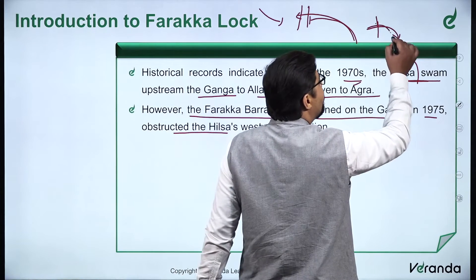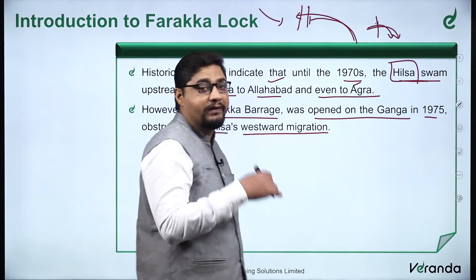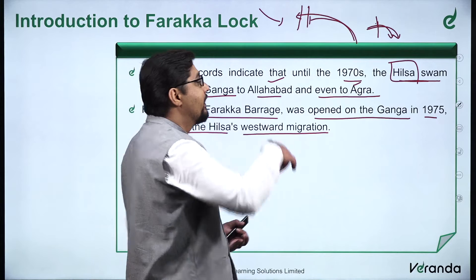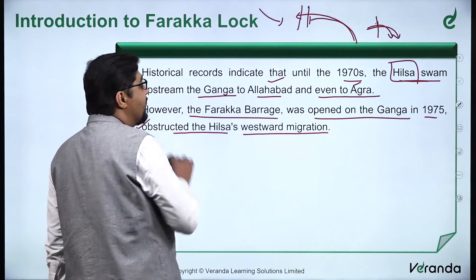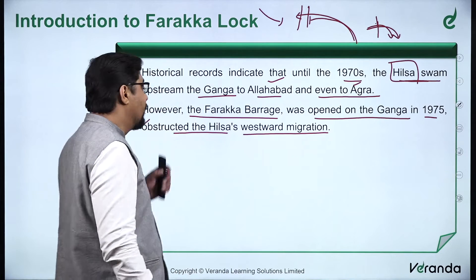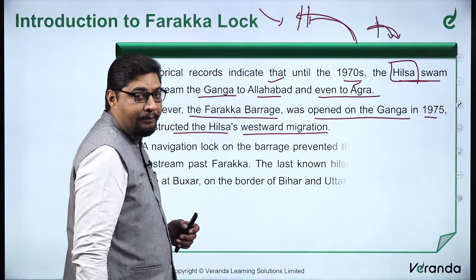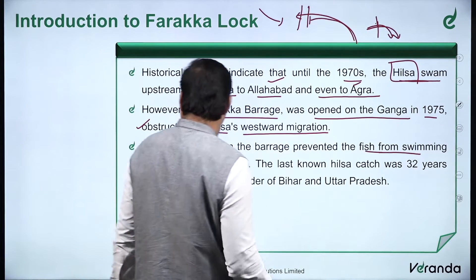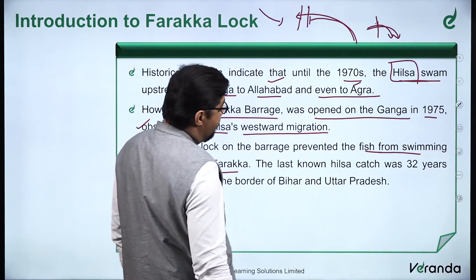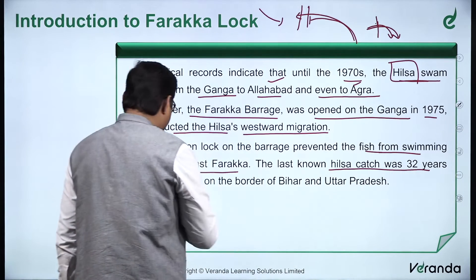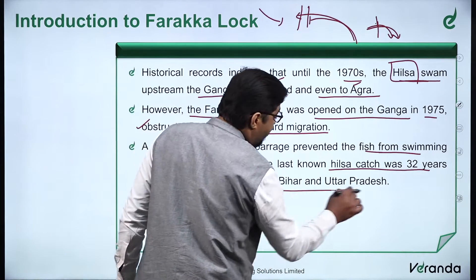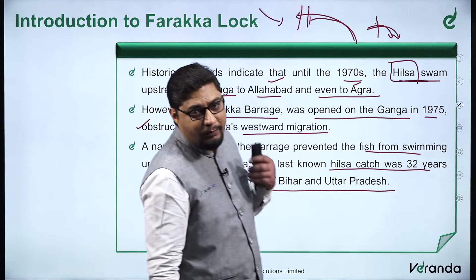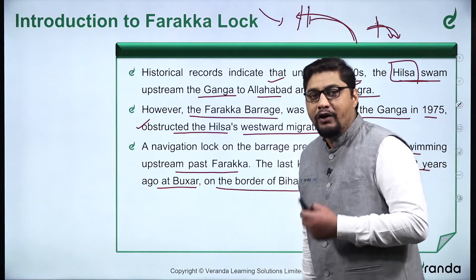If it is a downstream situation, there are chances that fish can travel when water is released. But since the Hilsa travels upstream, it cannot go up past the barrage. So the Hilsa's westward migration was halted by the Farakka Barrage. Additionally, a navigation lock on the barrage prevented the fish from swimming upstream past Farakka. The last known Hilsa catch was 32 years ago at Baksar on the border of Bihar and Uttar Pradesh. The fish was travelling there before, but it is no longer able to, showing we have disrupted its pathway.